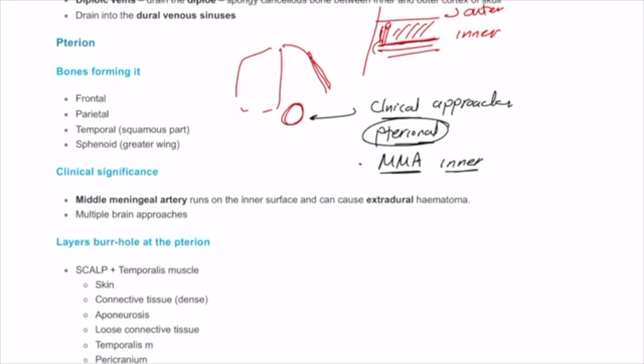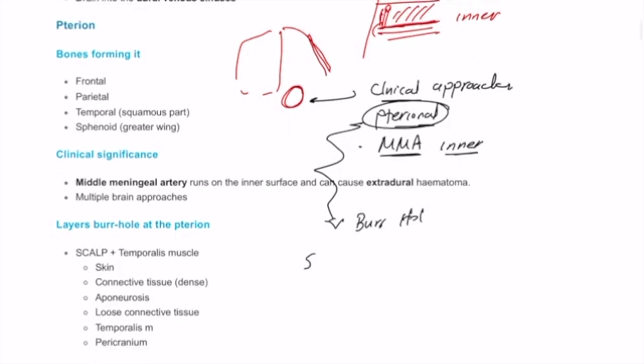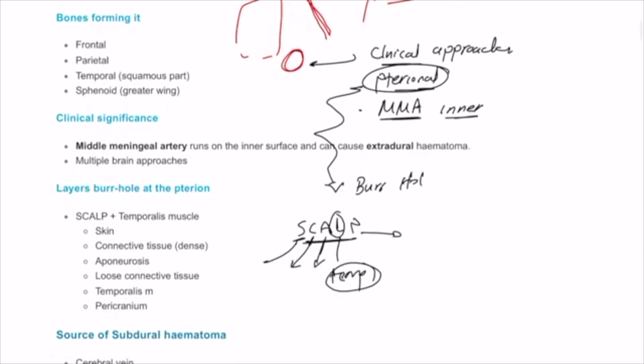If you do a pterional approach or any bare hole over the pterion area, it will pass through certain structures starting by all the scalp layers, but notice that on this side we have the temporalis muscle as well. So instead of loose connective tissue we're going to replace this by temporalis muscle, and you have the skin, connective tissue, aponeurosis, pericranium, and in between the temporalis muscle and its sheath.